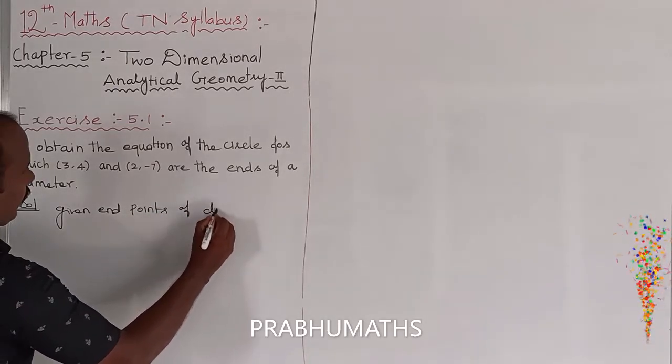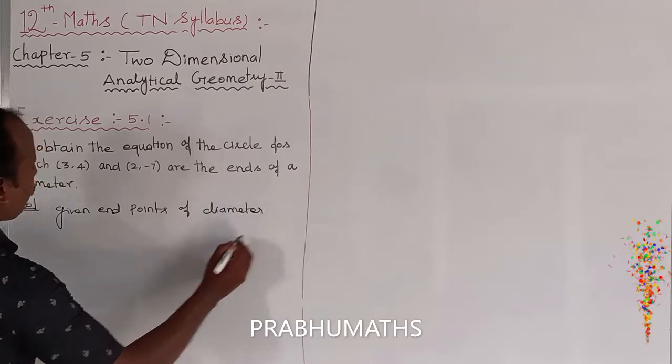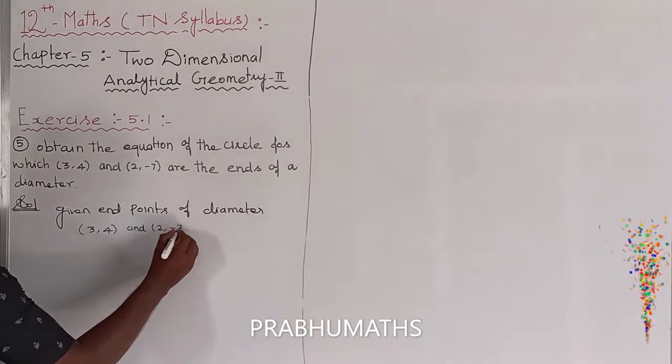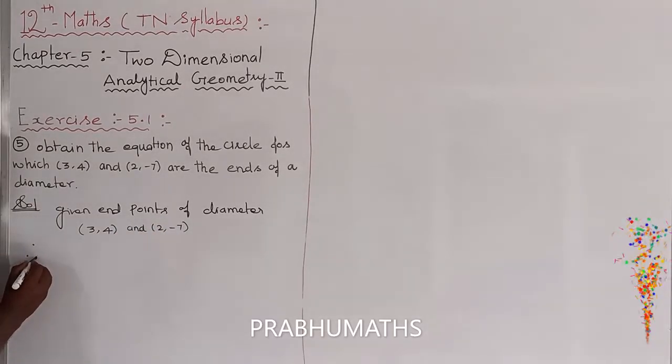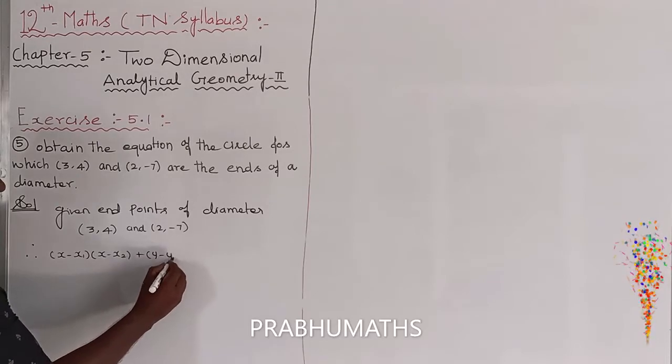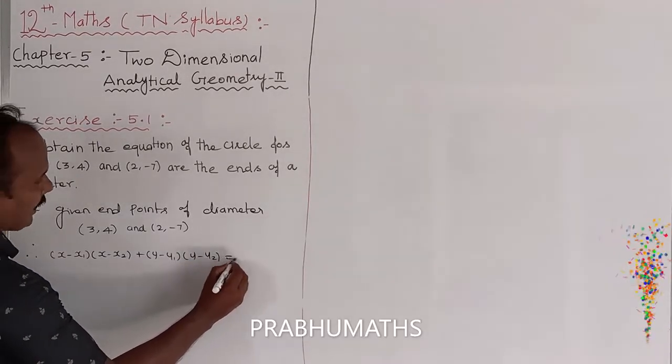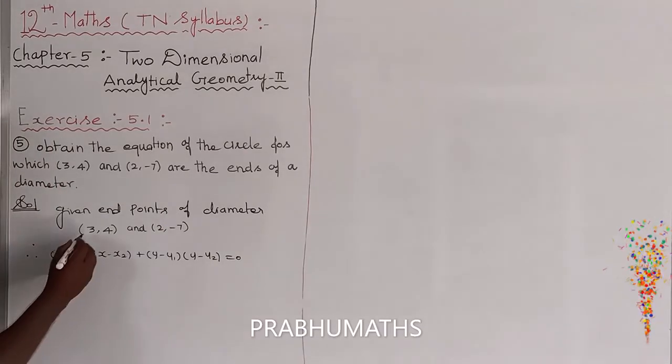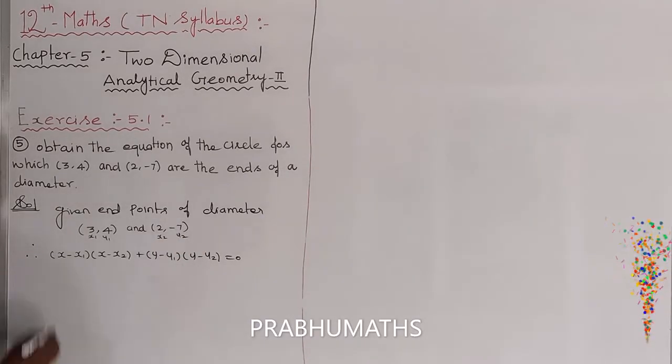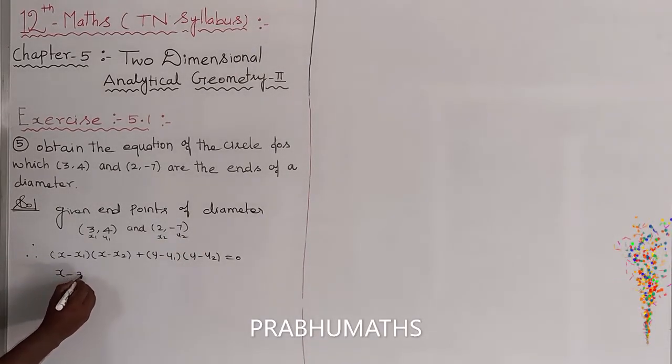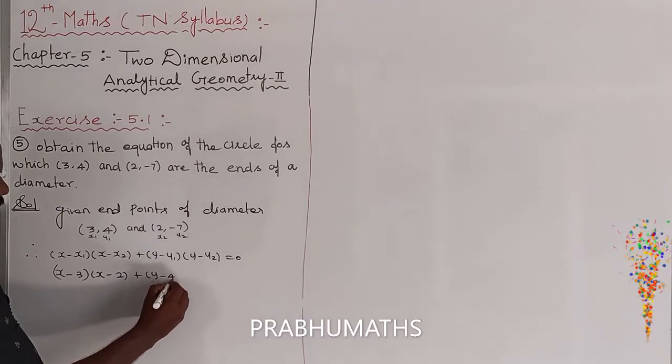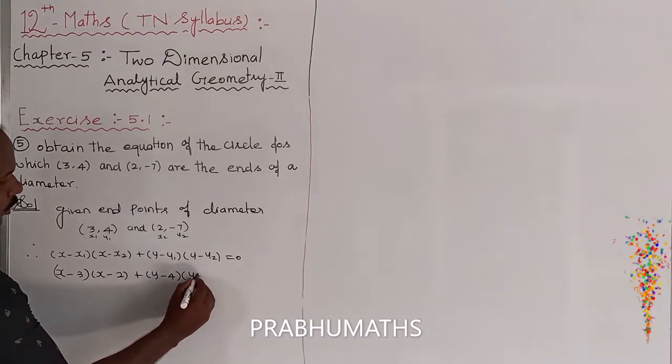The points of diameter are (3,4) and (2,-7). Therefore, the formula is: (x-x1)(x-x2) plus (y-y1)(y-y2) equals 0. This one: x1, y1, x2, y2, clear. So (x-3)(x-2) plus (y-4)(y+7) equals 0. That is the general form of the circle.